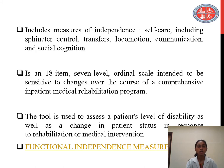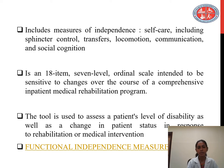It includes measures of independence which are self-care including sphincter control, transfers, locomotion, communication, and social cognition. It is an 18-item, 7-level ordinal scale intended to be sensitive to changes over the course of a comprehensive inpatient medical rehabilitation program. The tool was used to assess a patient's level of disability as well as change in patient's status in response to rehabilitation or medical intervention.